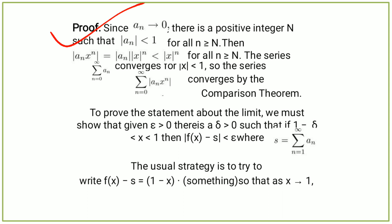So the series summation from n equals 0 to infinity of aₙxⁿ converges by the comparison theorem. To prove the statement about the limit, we must show that given epsilon greater than 0, there exists a delta such that if 1 minus delta is less than x less than 1, then mod of f(x) minus s is less than epsilon, where s equals the summation from n equals 0 to infinity of aₙ.